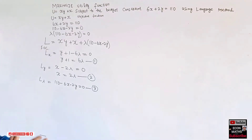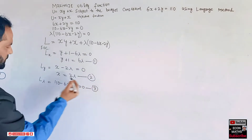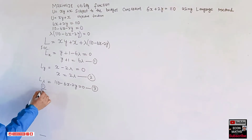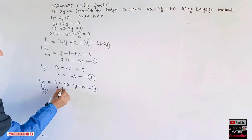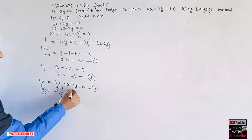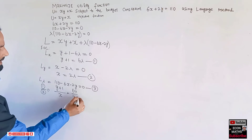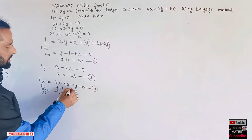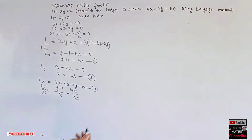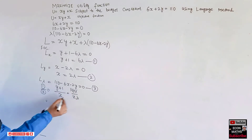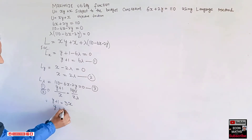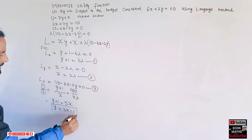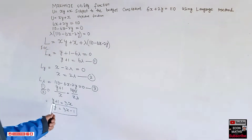Now we divide equation one by equation two: (y + 1) / x = 6λ / 2λ. The lambdas cancel, giving us (y + 1) / x = 3. Cross-multiplying, y + 1 = 3x, which implies y = 3x - 1.